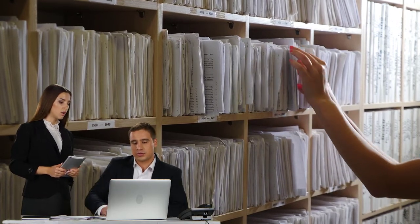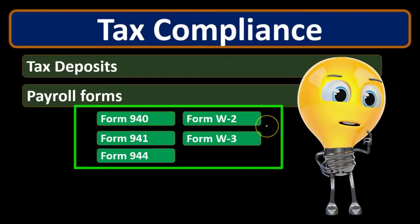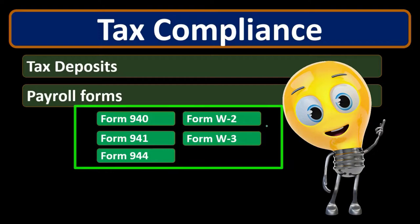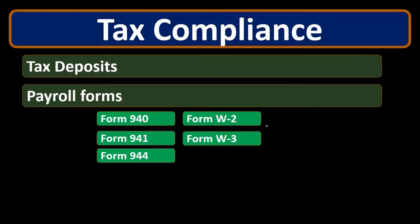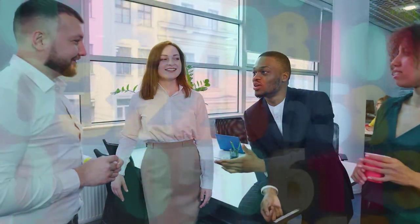The Form W-3 looks similar to the W-2 and is related — it sums everything up. If you look at your W-2 and sum up all the boxes for all employees, that's essentially what the W-3 would be: a summary or recap of all employees put together. If all the W-2s were for one employee, that's what the W-3 would look like.